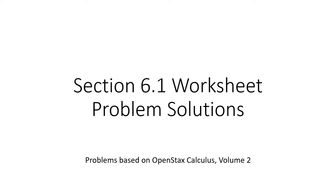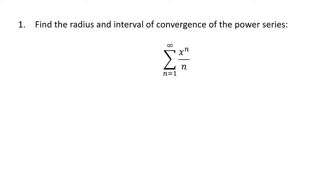This video contains solutions to practice problems from section 6.1 on power series and functions. For these first few examples, we're going to be practicing finding the radius and interval of convergence of a power series. In this course, we're always going to use the ratio test to get started with this kind of problem. The ratio test looks at the limit as n goes to infinity of the absolute value of a_{n+1} divided by a_n, which will help us figure out the interval of convergence.